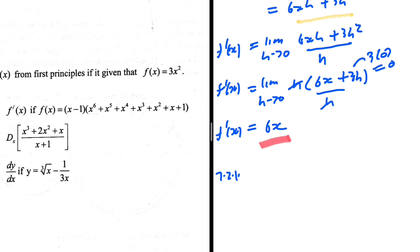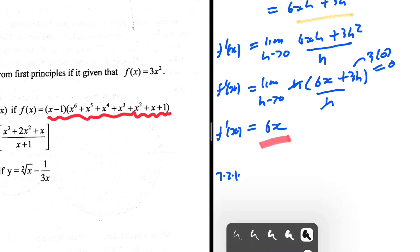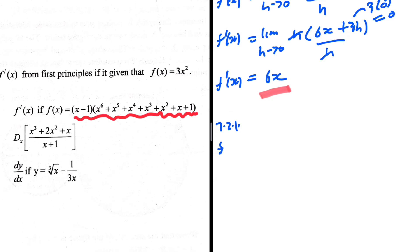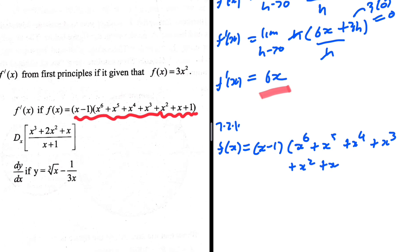Now 7.2.1: find f prime of x where f of x equals (x minus 1) multiplied by (x to the power 6 plus x to the power 5 plus x to the power 4 plus x to the power 3 plus x squared plus x plus 1). There may be a fancy trick here but it's not immediately obvious, so let's do it the hard way.